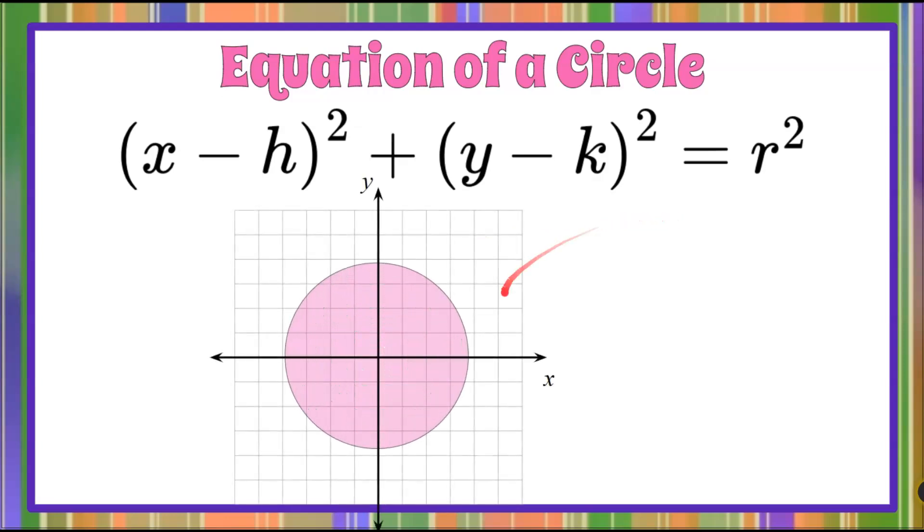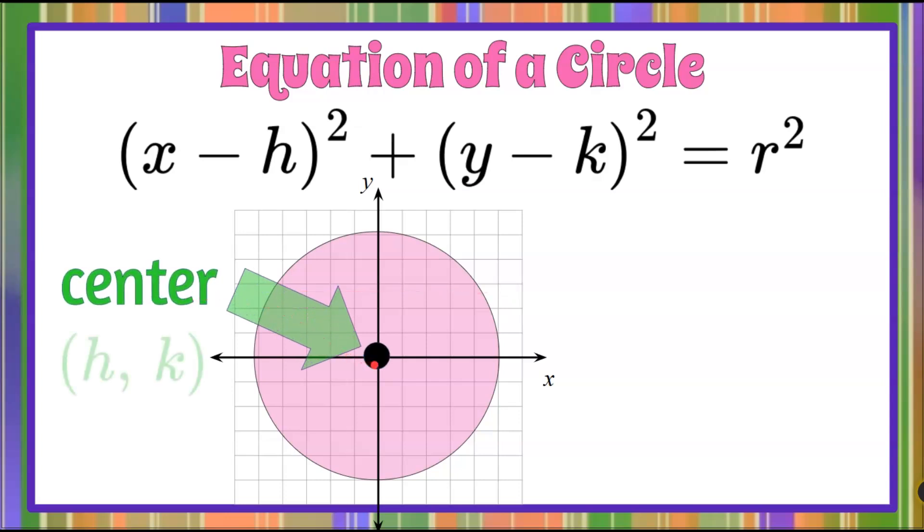On a coordinate plane, we have a circle. We're going to identify the center of the circle, which is represented by the variables h,k—h being the x-coordinate of that center point, and k being the y-coordinate of the center point.